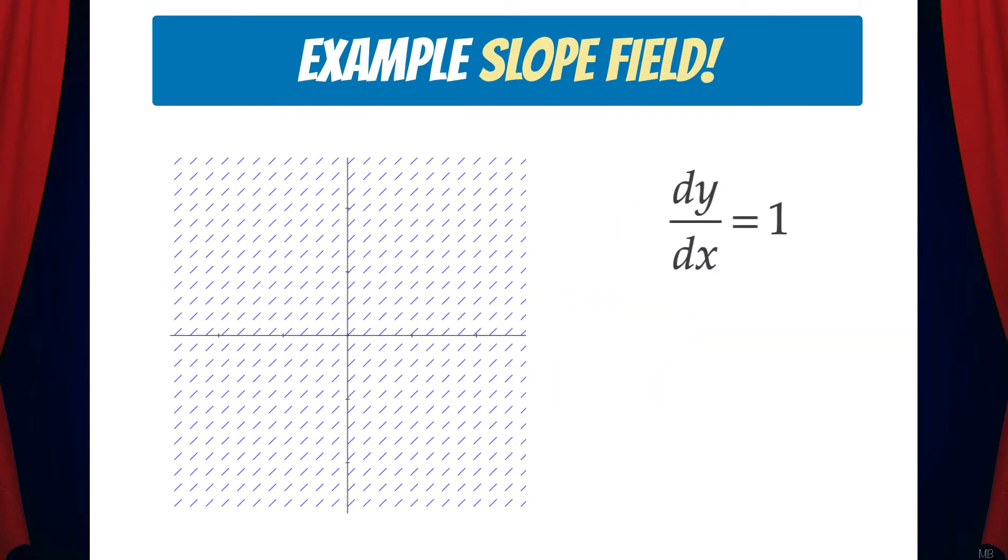For example, this is the slope field for the differential equation dy/dx equals 1. As you can see, we have a collection of short line segments. And if we follow the flow of the line segments, we get a picture of different solutions to the differential equation. In this case, we can easily solve the differential equation. And when we do that, we get y equals x plus c. And the slope field shows us a graphical representation of this family of functions.